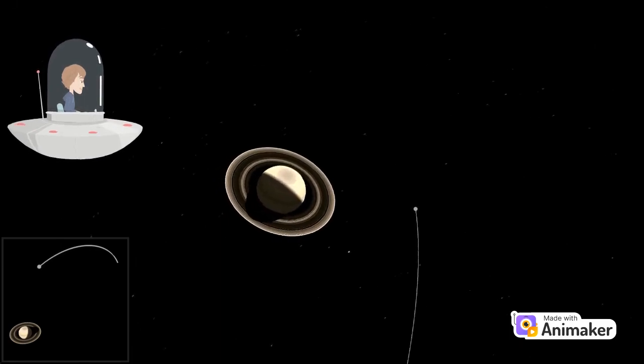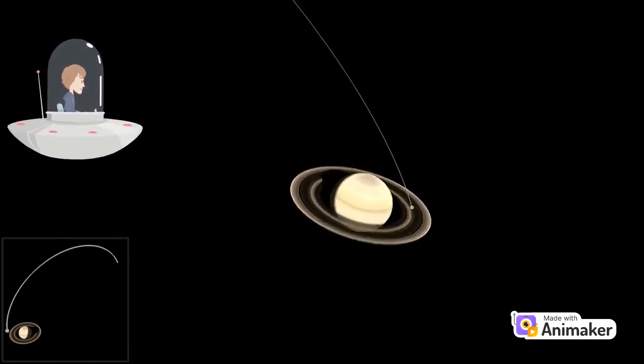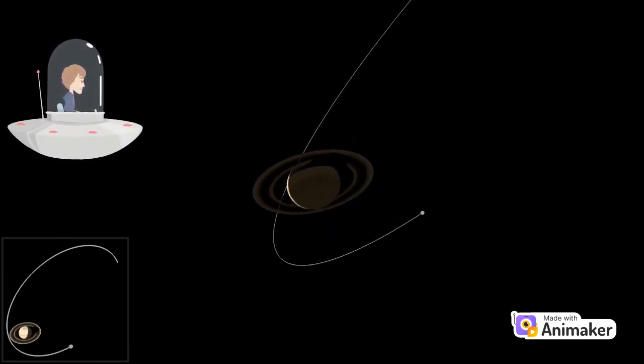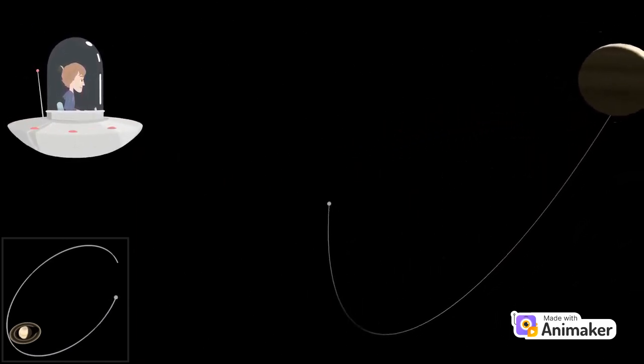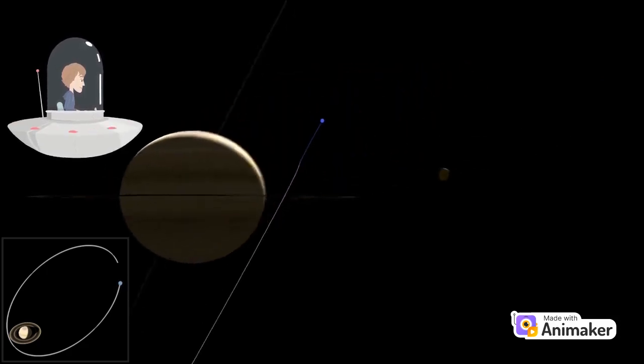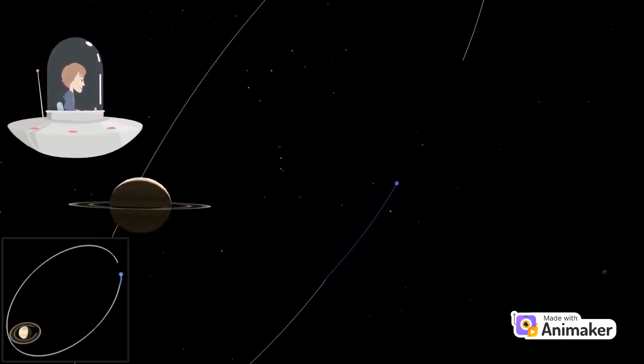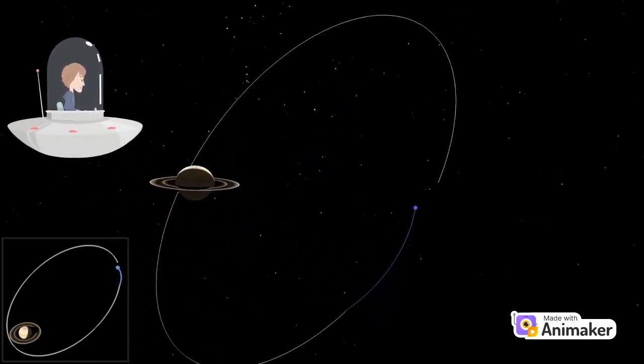That doesn't include Saturn's rings. Saturn has 53 known moons, with an additional 29 moons awaiting confirmation of their discovery. That is a total of 82 moons.